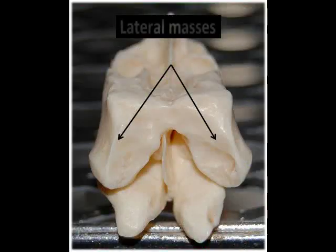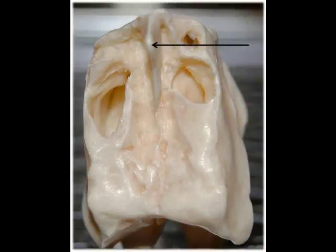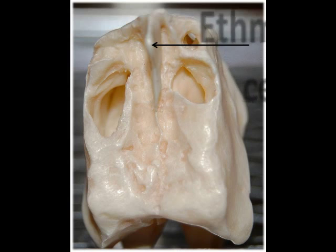The main body of the ethmoid bone consists of two lateral masses, which form most of the wall between the nasal cavity and the orbits. The lateral masses have a porous structure filled with air spaces called the ethmoidal cells, and combined together form the ethmoidal sinuses.